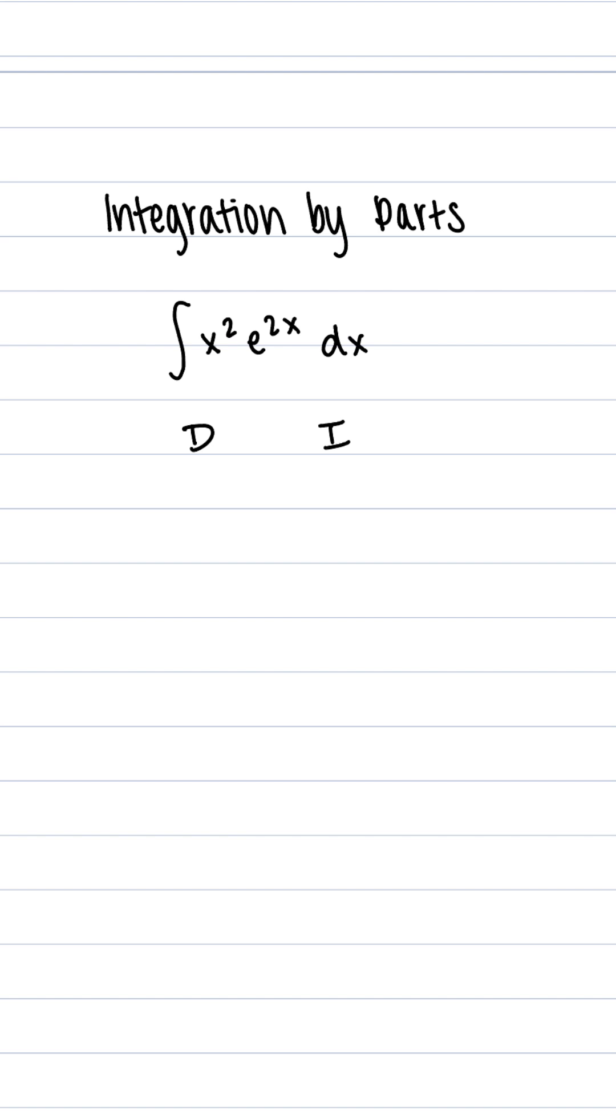So what we take the derivative of, we want it to go down to 0. So I'm going to take x squared because its derivative is 2x, 2, and then 0.